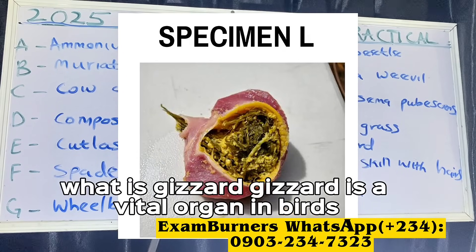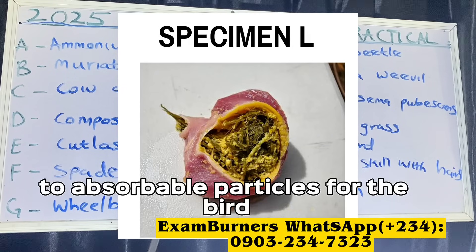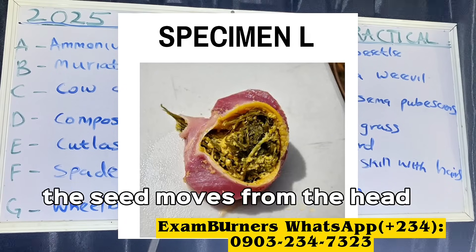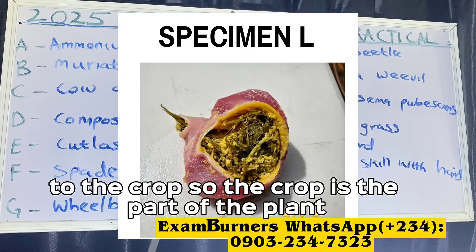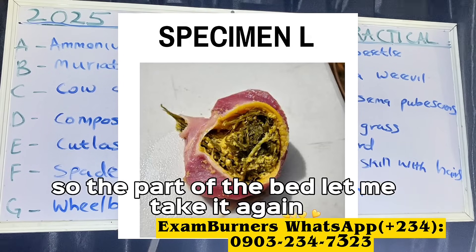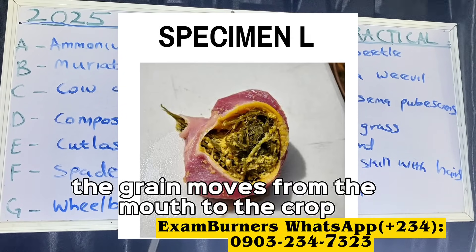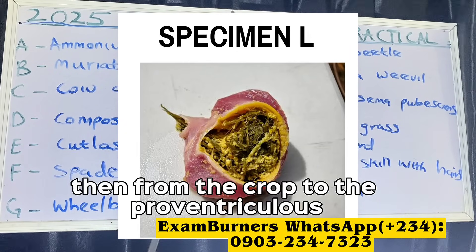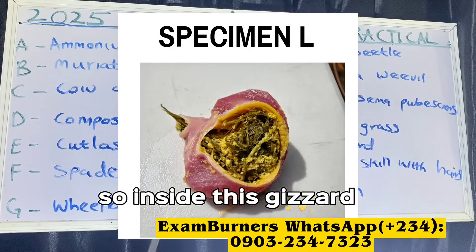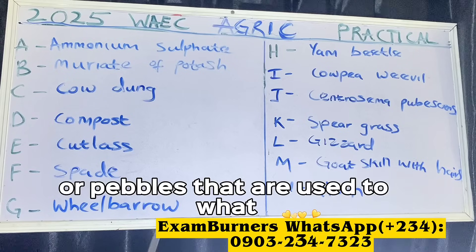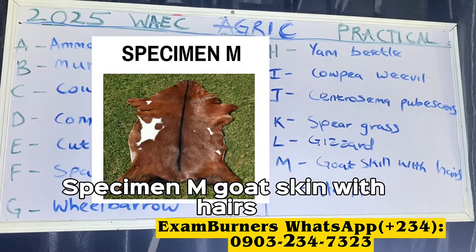The gizzard is a vital organ in birds — it is where food is ground into absorbable particles. When a bird swallows a grain, the grain moves from the mouth to the crop, which is a temporary storage organ. From the crop it moves to the proventriculus, then to the gizzard where the food is ground. Inside the gizzard there are small grits or pebbles that are used to crush and grind grains swallowed by birds.